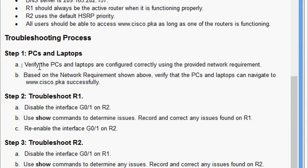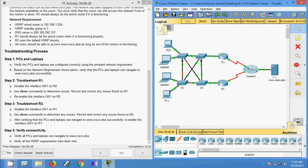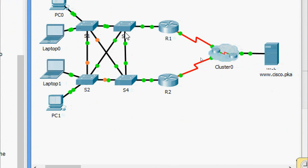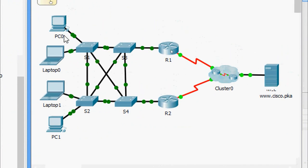In Step 1, we verify the PCs and laptops are configured correctly using the provided network requirements. Based on the network requirements, we verify that the PCs and laptops can navigate to www.cisco.pka successfully. Coming to the topology, we are going to access this webpage from all end devices.